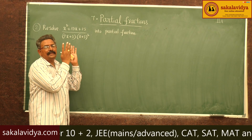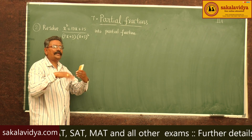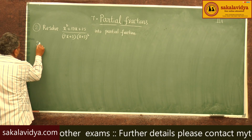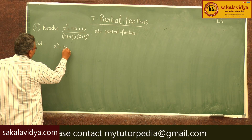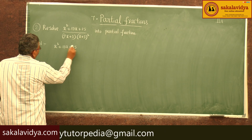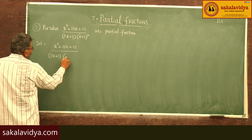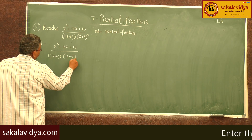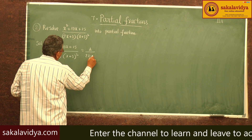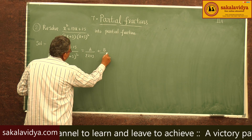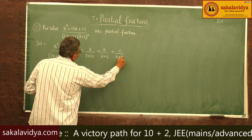First, let us write the existing partial fractions, then we find A, B, C values. So: (x² + 13x + 15) / [(2x + 3)(x + 3)²] = A/(2x + 3) + B/(x + 3) + C/(x + 3)².